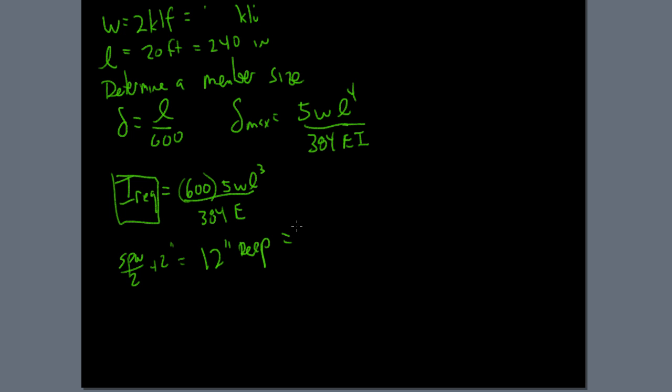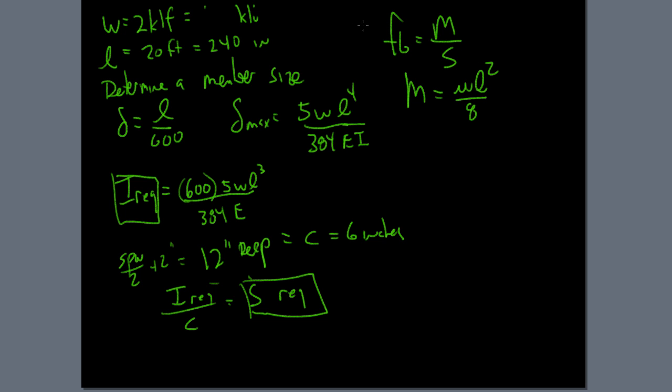And of course, using the general rule of span in feet divided by 2 plus 2 inches, we get something in this case, you probably want something like a 12 inch deep or 14 inch. We'll go with 12 inch deep, which means C or the half depth equals 6 inches. And so once you know I required, you take I required over C which is equal to S required. And realizing the bending stress is M divided by S, and maximum is WL squared over 8.